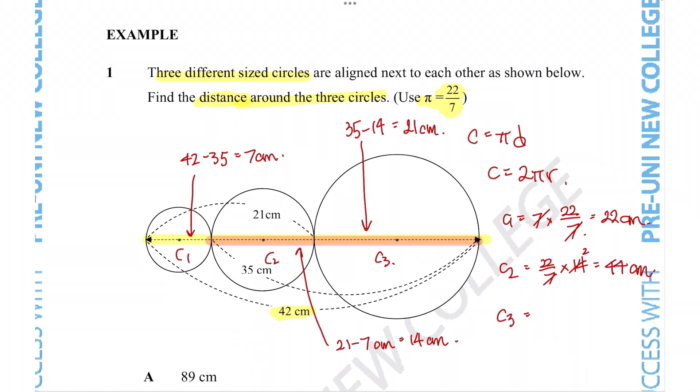Finally, for the last circle, exactly the same, 22 over 7 times by 21, 7 goes into 21 three times, 22 times 3 is equal to 66 centimeters.